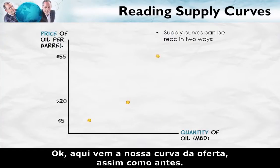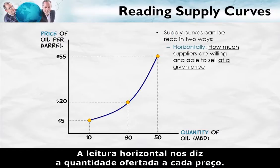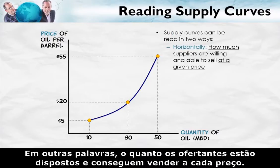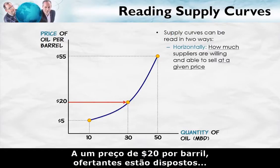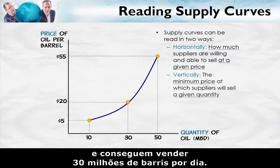Here comes our supply curve, just as before. The horizontal reading tells us the quantity supplied at each price — in other words, how much suppliers are willing and able to sell at each price. At a price of $20 per barrel, suppliers are willing and able to sell 30 million barrels of oil per day.